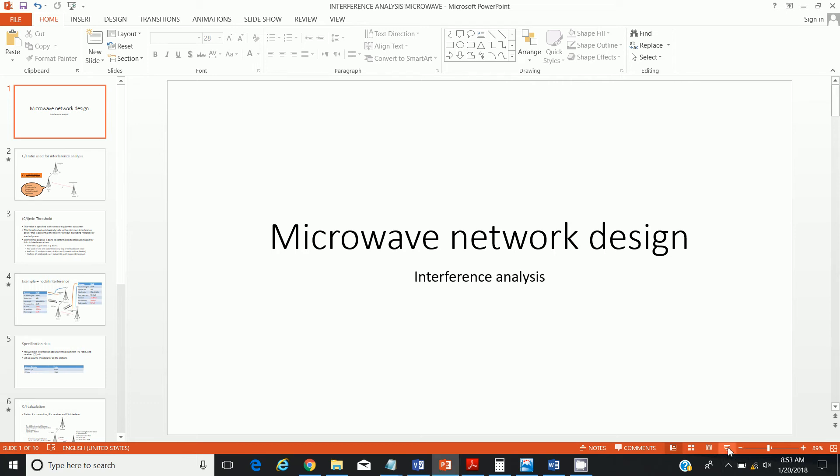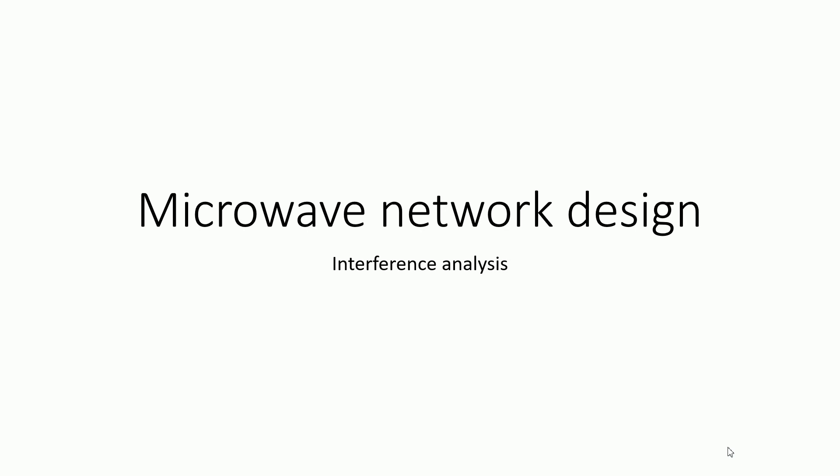Hello everyone, good morning. My name is Mr. Jama and today I would like to discuss with you how to do interference analysis when you are designing your microwave transmission network. Interference is a problem for all wireless communications, and it happens when you have two transmitters or two stations transmitting at the same time at the same frequency.